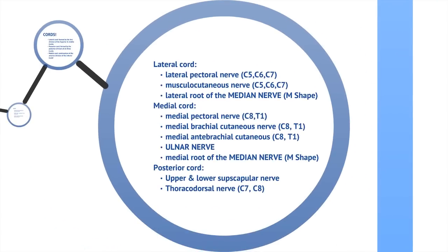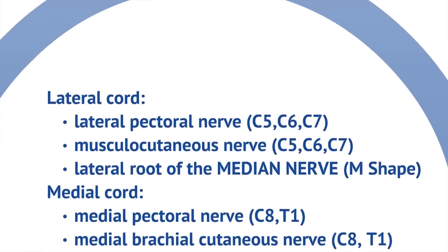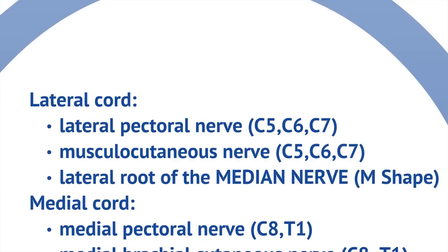These cords give off several nerves that supply a lot of muscles in the upper limb. Looking at the lateral cord first: we have the lateral pectoral nerve, which supplies the pectoralis major and minor. We also have the musculocutaneous nerve, which supplies the biceps brachii. And then we have the lateral root of the median nerve, which forms a characteristic M shape that we see in the brachial plexus.